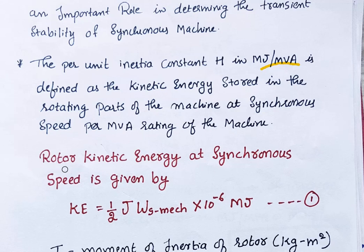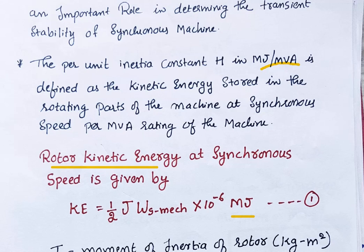The rotor kinetic energy at synchronous speed is given by K equals one-half J times omega_S (mechanical synchronous speed) times 10 to the minus 6, because we express this in Mega Joules. The kinetic energy stored is one-half J times omega_S mechanical times 10 to the minus 6 Mega Joules.